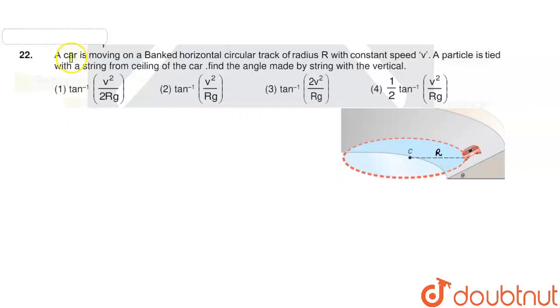Hello everyone. The question is: a car is moving on a banked horizontal circular track of radius R with constant speed v. A particle is tied with a string from ceiling of the car. Find the angle made by the string with the vertical.